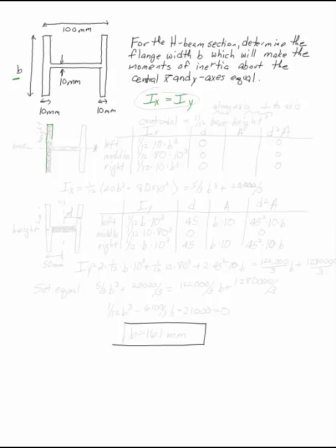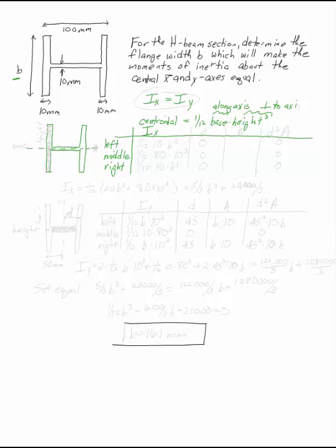The axes we need to take these about are the central axes. Consider the first axis running right through the middle horizontally. To find Ix, remember that about the centroidal axis each of these pieces is a rectangle. The centroidal moment of inertia for a rectangle is 1/12 times base times height cubed, where the base is along the axis and the height is measured perpendicular to the axis you're taking your moment of inertia about.